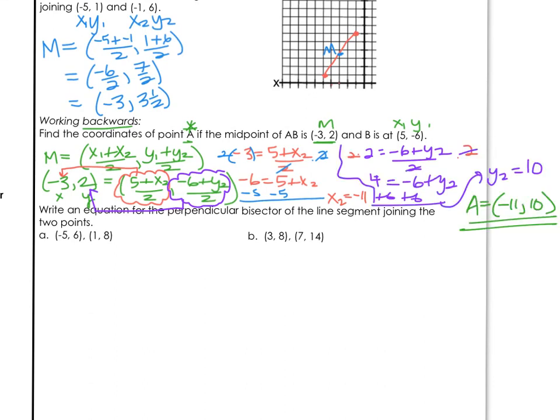So working backwards, there's a little bit more work involved. But it's just kind of some basic algebra again. You should get your y2 coordinate to be positive 10. What this means is that point A has to be at the coordinates (-11, 10) for the midpoint to be (-3, 2). And I think that's enough for this first part of lesson 9.1.